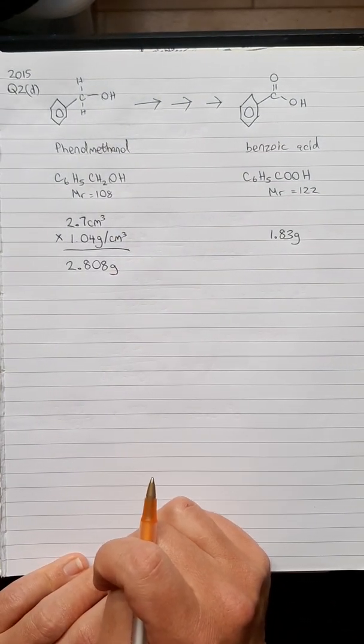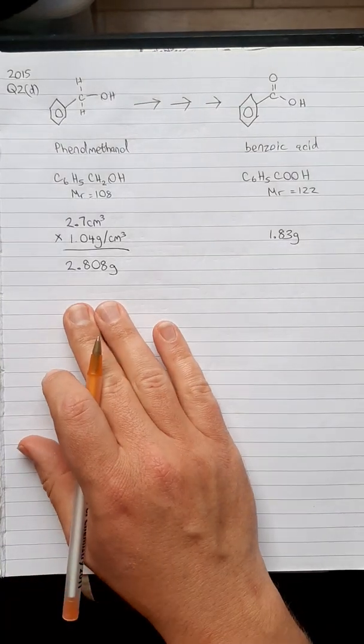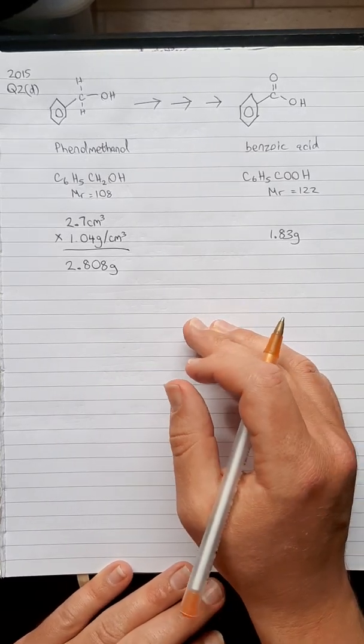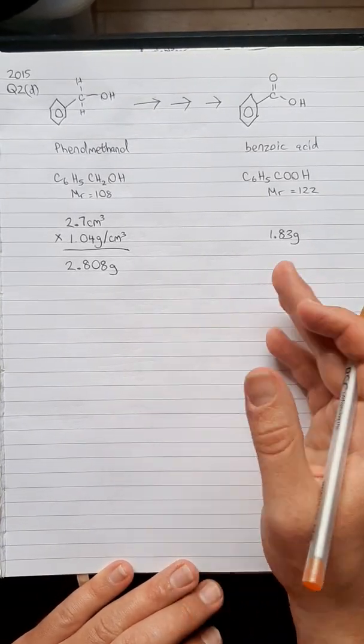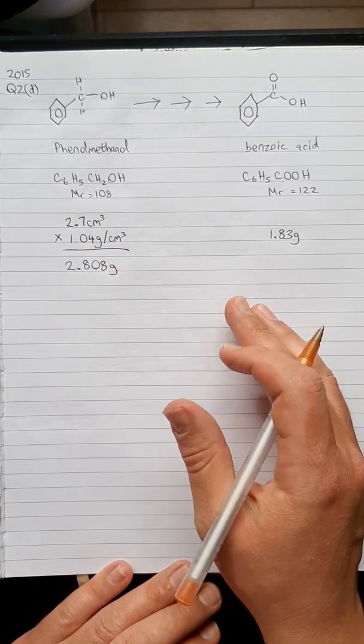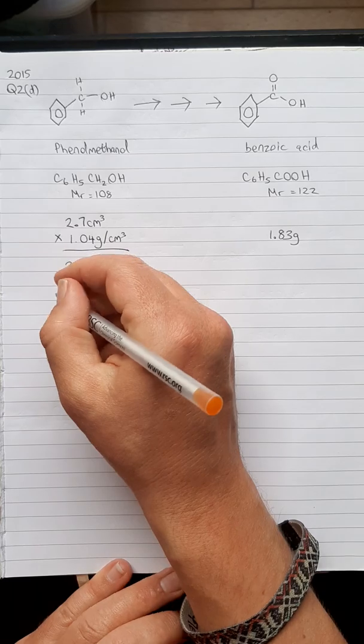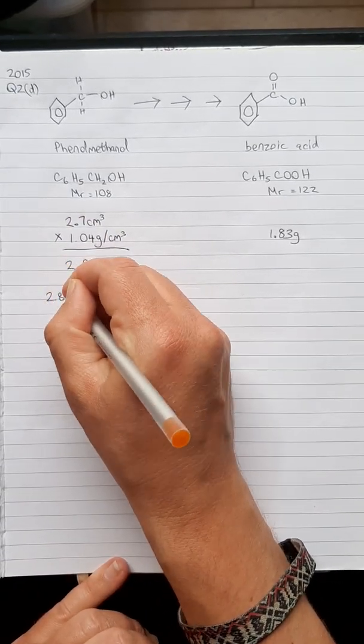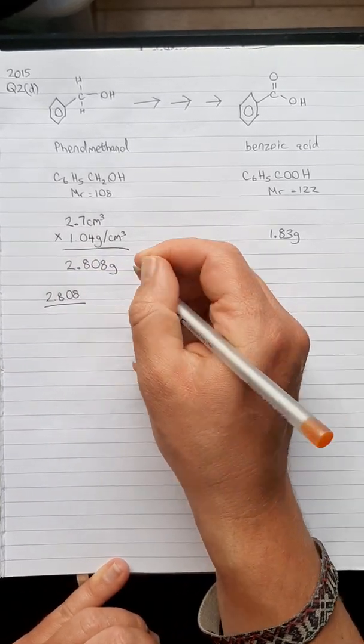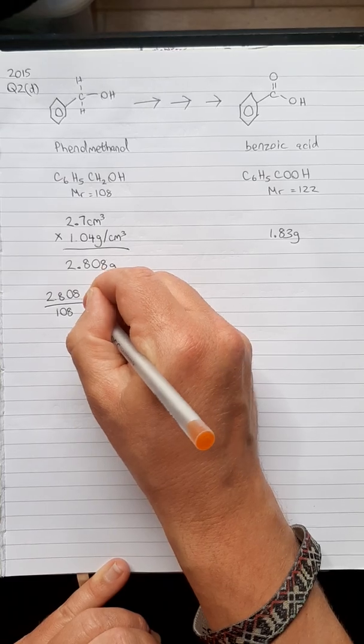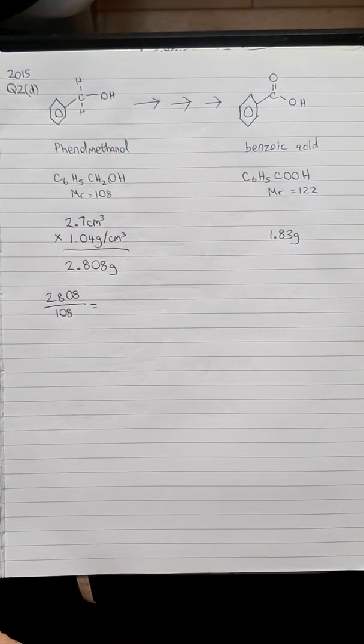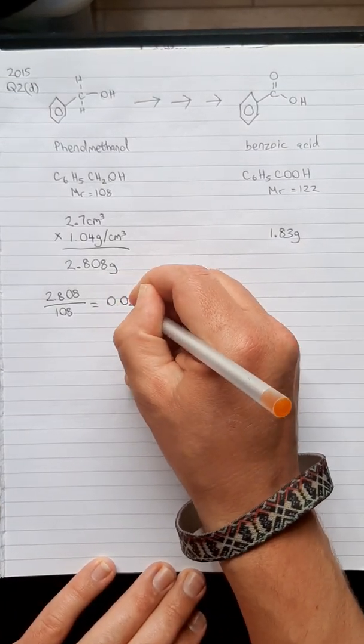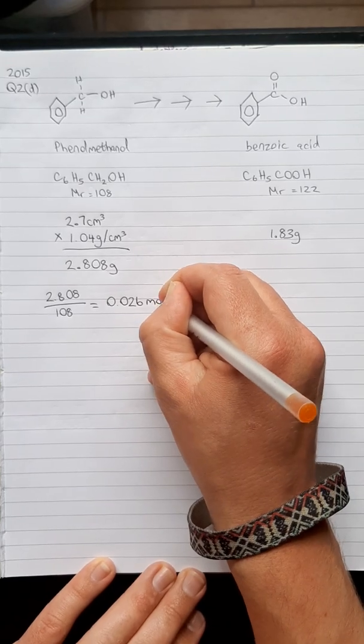That's what we're starting with, 2.808 grams of the phenylmethanol. Now we're going to get that into moles. We can't compare grams to grams because moles is the international code that lets us compare one side of the equation to the next. If we take our mass in grams, 2.808, and divide that by our MR which is 108, we'll get the number of moles of phenylmethanol that we begin with, and that gives us 0.026 moles.